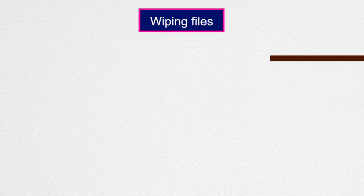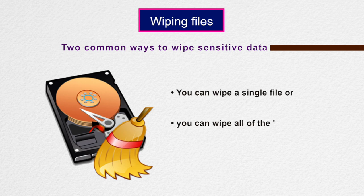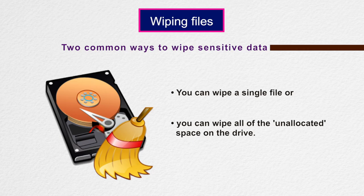There are two common ways to wipe sensitive data from your hard drive or storage device: you can wipe a single file, or you can wipe all of the unallocated space on the drive. Considering the report example, if you wipe the file itself, you guarantee that the current version is completely removed, but you leave the other copies where they are. In fact, there is no way to target those copies directly because they are not visible without special software. By wiping all the blank space on your storage device, however, you ensure that all previously deleted information is destroyed.